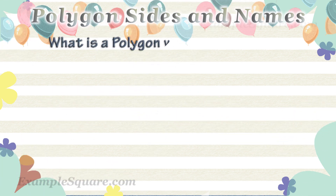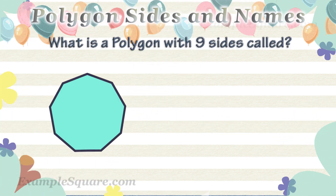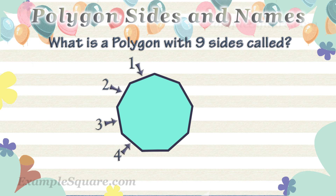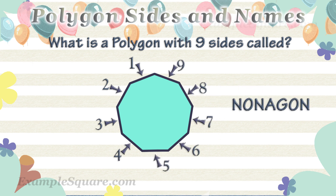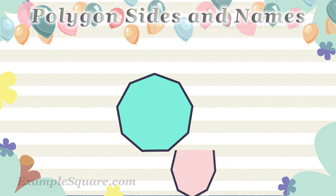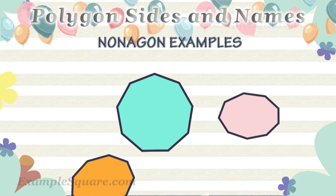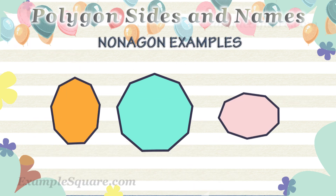What is a polygon with 9 sides called? A polygon with 9 sides is called a nonagon. These are some examples of nonagons.